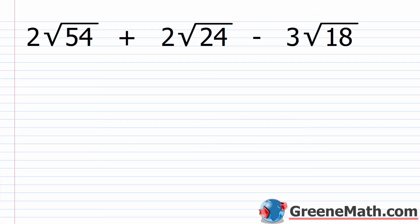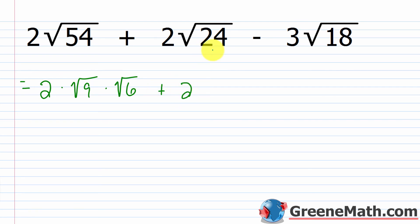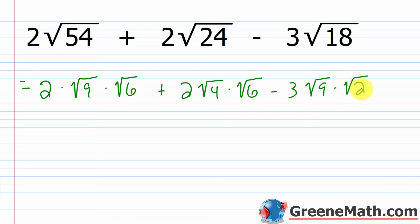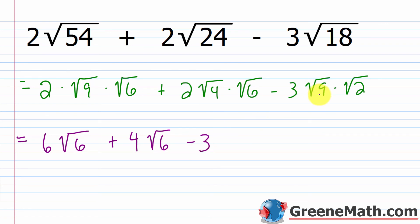Let's look at: 2 times the square root of 54 plus 2 times the square root of 24 minus 3 times the square root of 18. We don't have any like radicals to start, so let's break everything down. Square root of 54 is square root of 9 times square root of 6: 2 times 3 gives 6 times square root of 6. Square root of 24 is square root of 4 times square root of 6: 2 times 2 gives 4 times square root of 6. Square root of 18 is square root of 9 times square root of 2: 3 times 3 gives 9, so minus 9 times square root of 2.